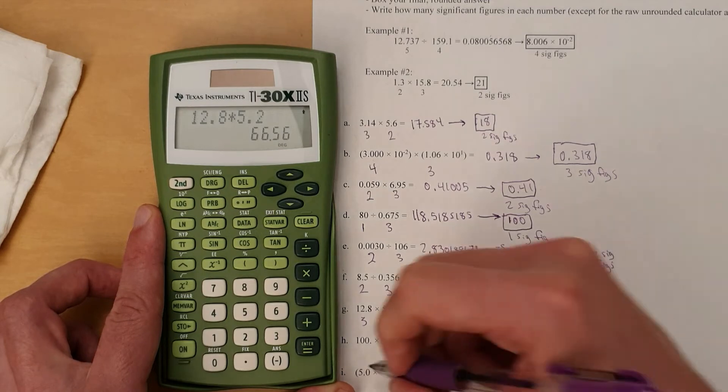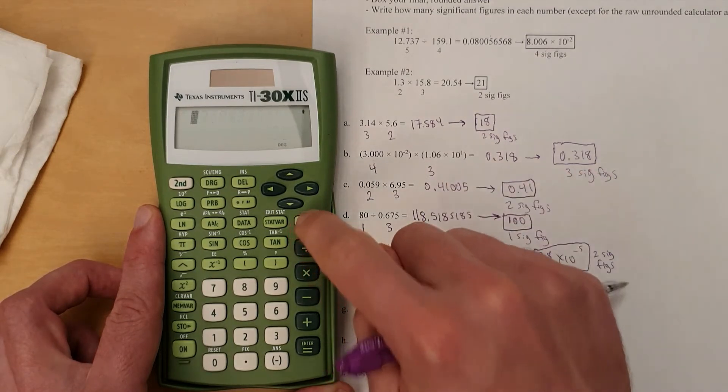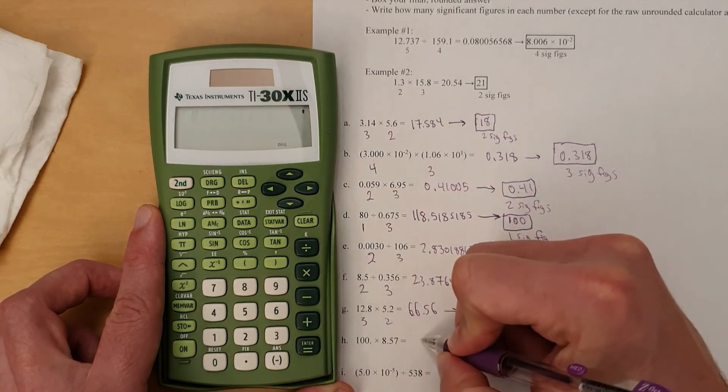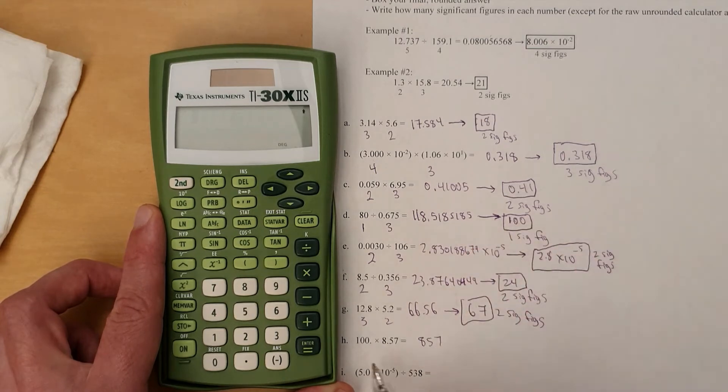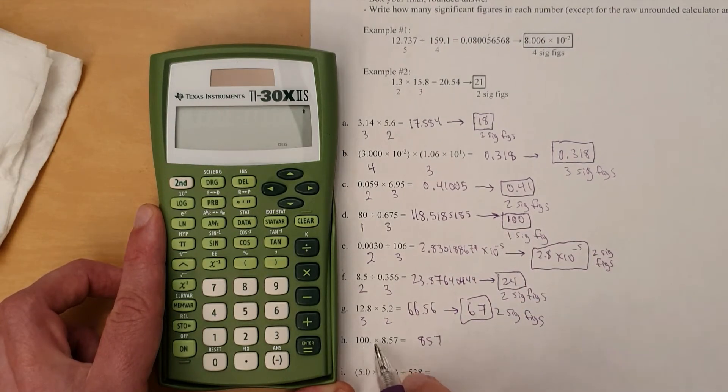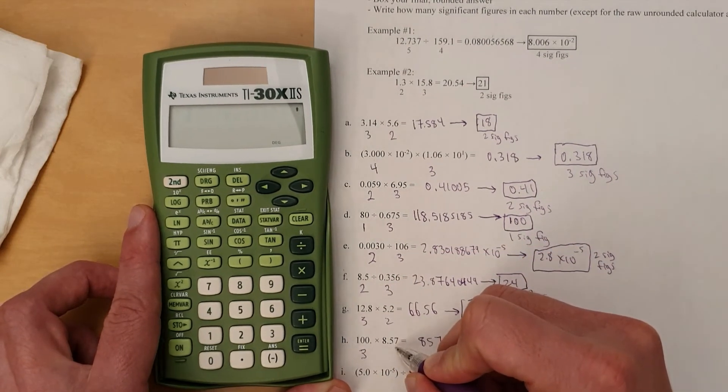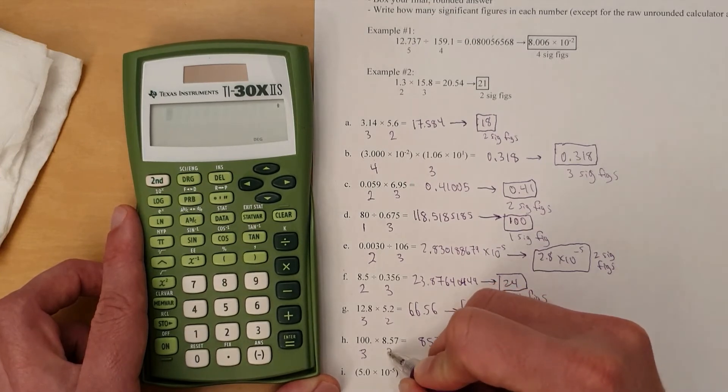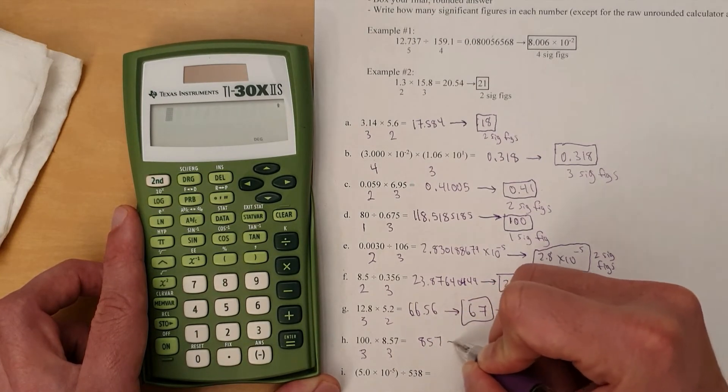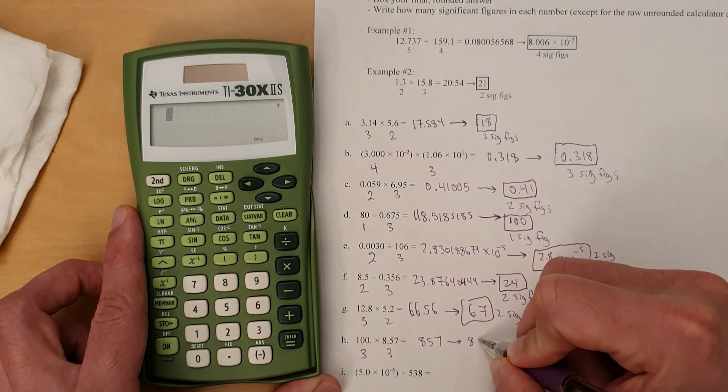All right, onward. 100 times 8.57. That's actually easy. That's 857. But what does that round to? Three sig figs. So three sig figs. That decimal makes it three. And then 8.57. That's also three sig figs. So you round to three sig figs, which means you just leave it as was. 857.